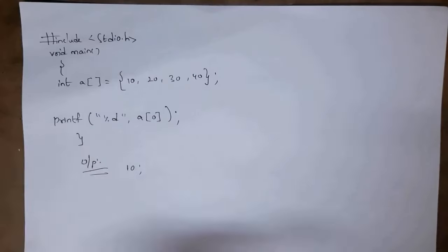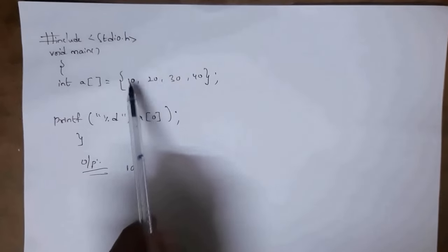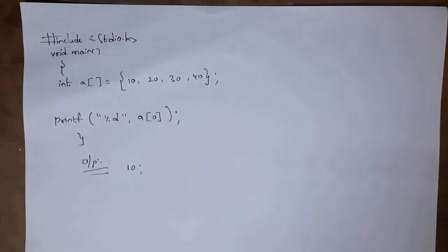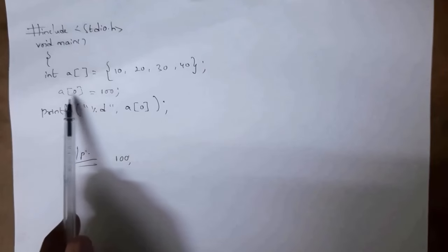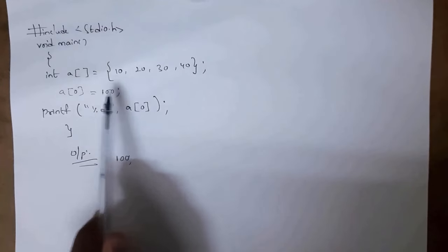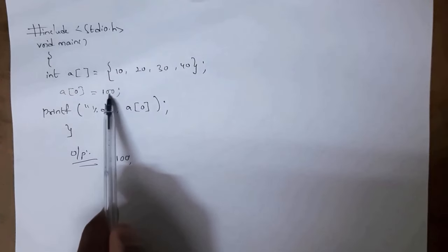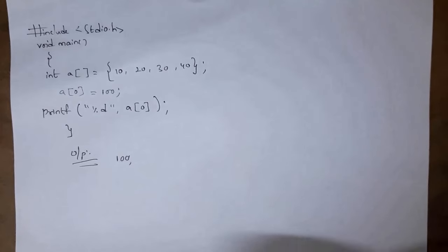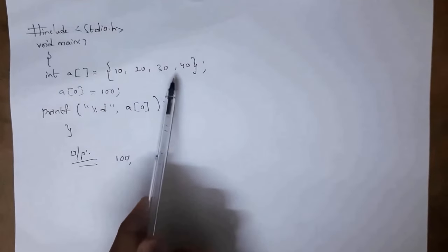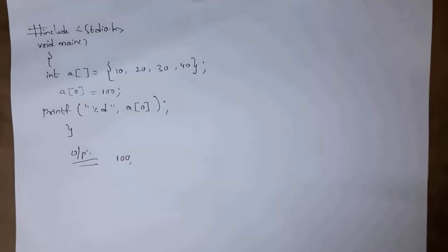Here for this program I got output as 10 because I declared index number 0. But if I want to change this value 10 to 100, I need to write a[0] = 100, meaning the value at index 0 is changed to 100, so now I will get output as 100. Similarly, if I want to change value 20 to 200, I need to write a[1] = 200. This is how we manipulate elements in an array.